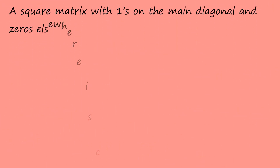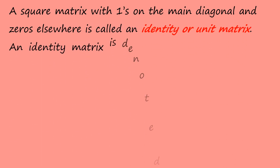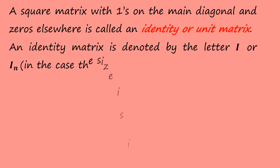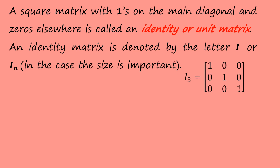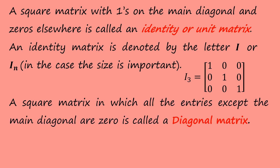A square matrix with ones on the main diagonal and zeros elsewhere is called an identity matrix or unit matrix. An identity matrix is denoted by I, or In when the size is important. For example, we have this 3 by 3 identity matrix. A square matrix in which all the entries except the main diagonal are 0 is called a diagonal matrix. For instance, we have this 3 by 3 diagonal matrix in which the diagonal entries are not 1.